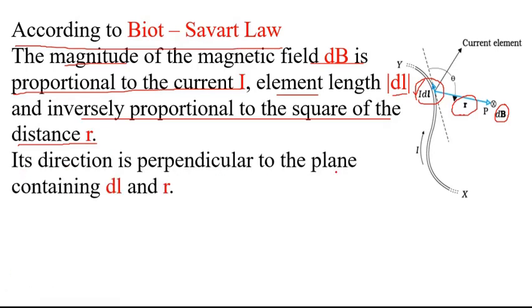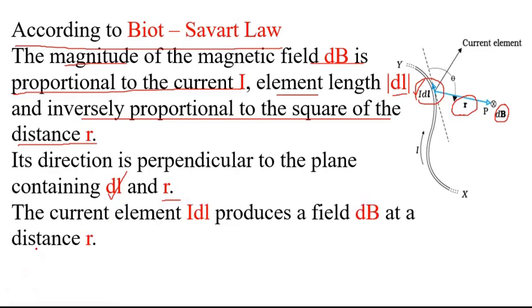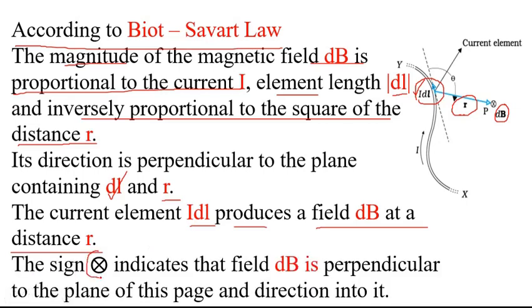The direction of dB is perpendicular to the plane containing DL — that is, a small length of the current carrying conductor XY — and the displacement vector R. The current element IDL produces a field dB at a distance R. This sign indicates that field dB is perpendicular to the plane and directed into it.